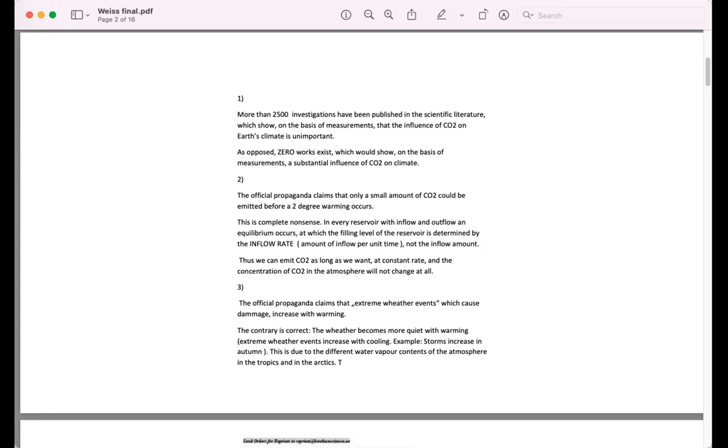And the third point is the official propaganda claims that extreme weather events which cause damage increase with warming. The contrary is correct. The weather becomes more quiet with warming. Storms increase in autumn, and if you are a student of meteorology, of course you know that in the first semester. So the opposite of what is officially claimed is correct. All the basis of the official claims here are simply wrong.